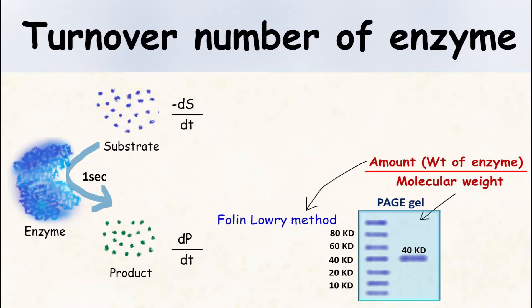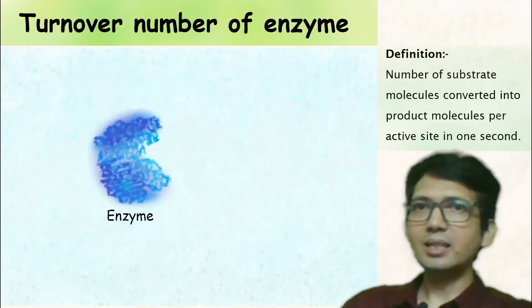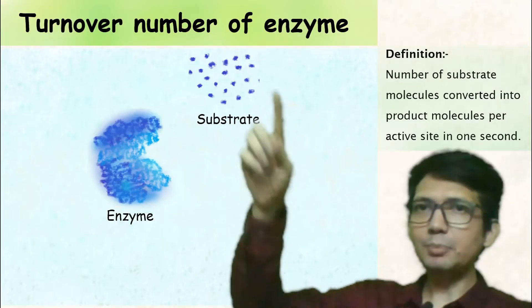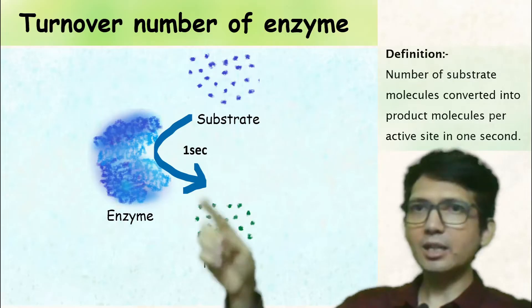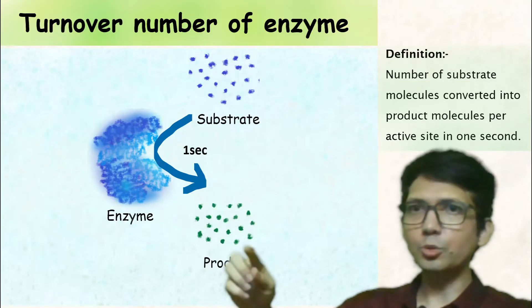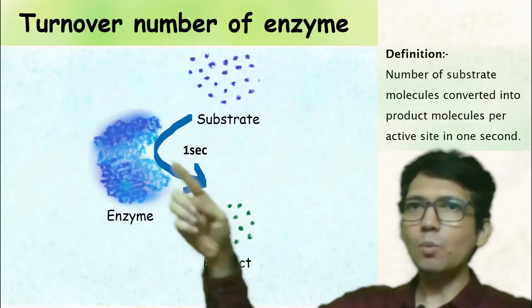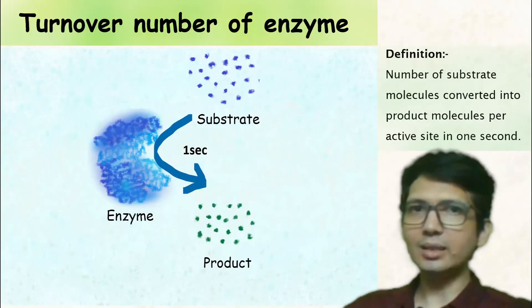Let's talk about the turnover number of an enzyme. The turnover number can be defined as the number of substrate molecules getting converted into product molecules per active site in one second.